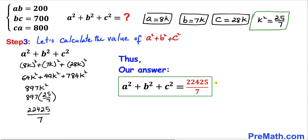So the value of a² + b² + c² turns out to be 22425/7, and that's our final answer. Thanks for watching, and please don't forget to subscribe to my channel for more exciting videos. Bye!